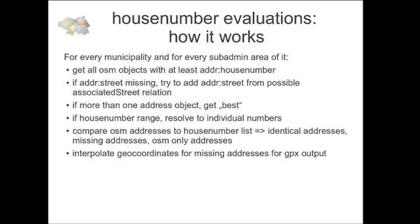I compare the found OSM addresses against the house number list. So I find out: identical house numbers, house numbers only in OSM which are probably errors or very new objects, or missing addresses which we have to add in the future. And I try to interpolate the geocoordinates for the missing house numbers using the house numbers we already have.